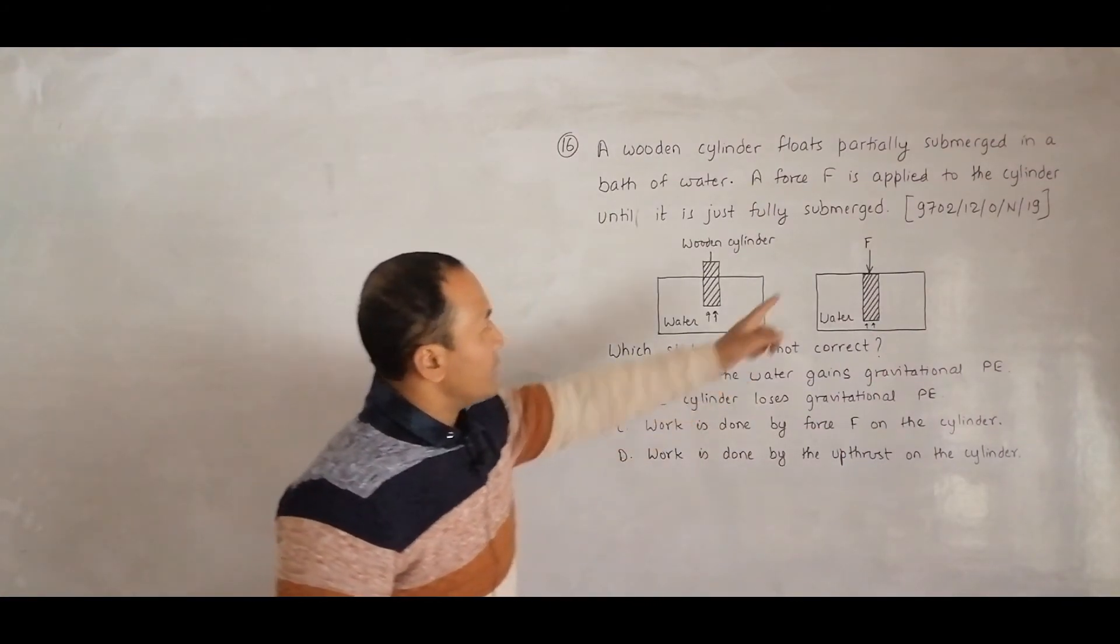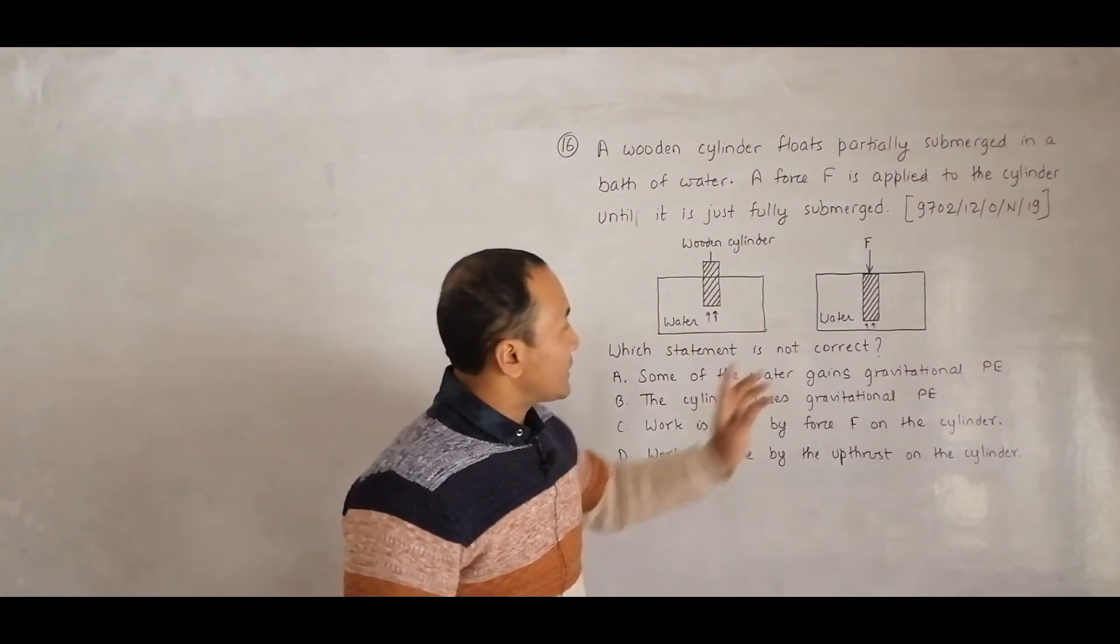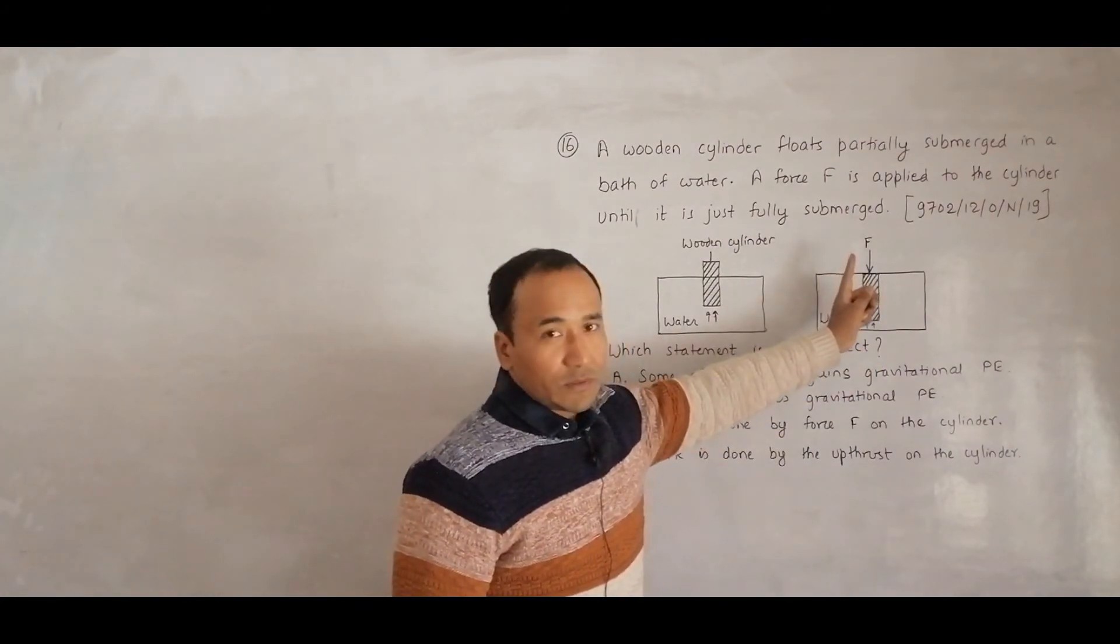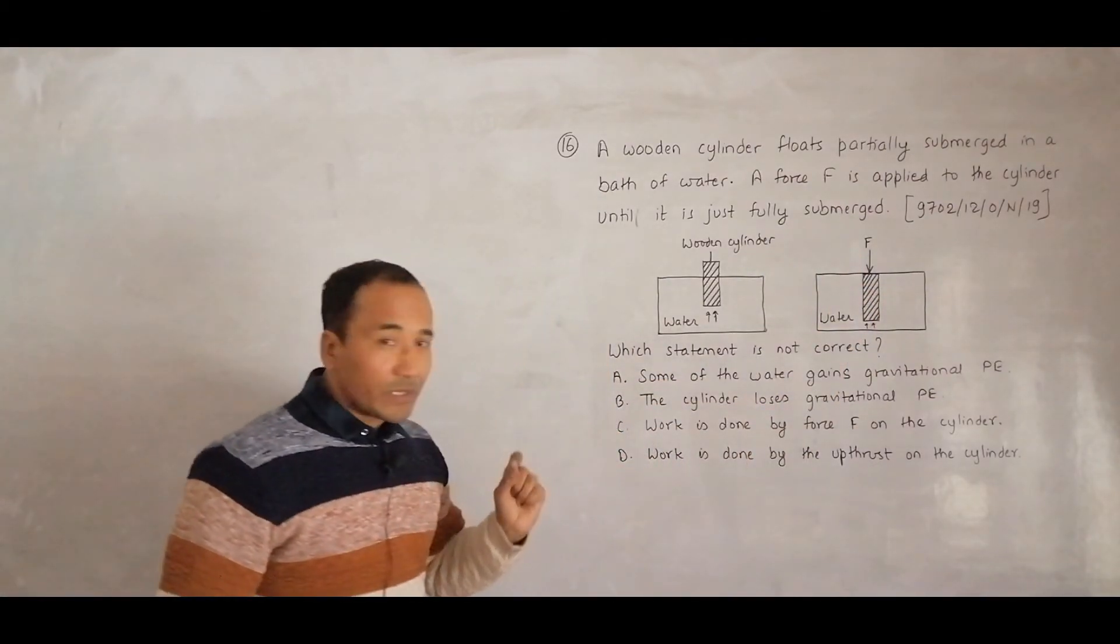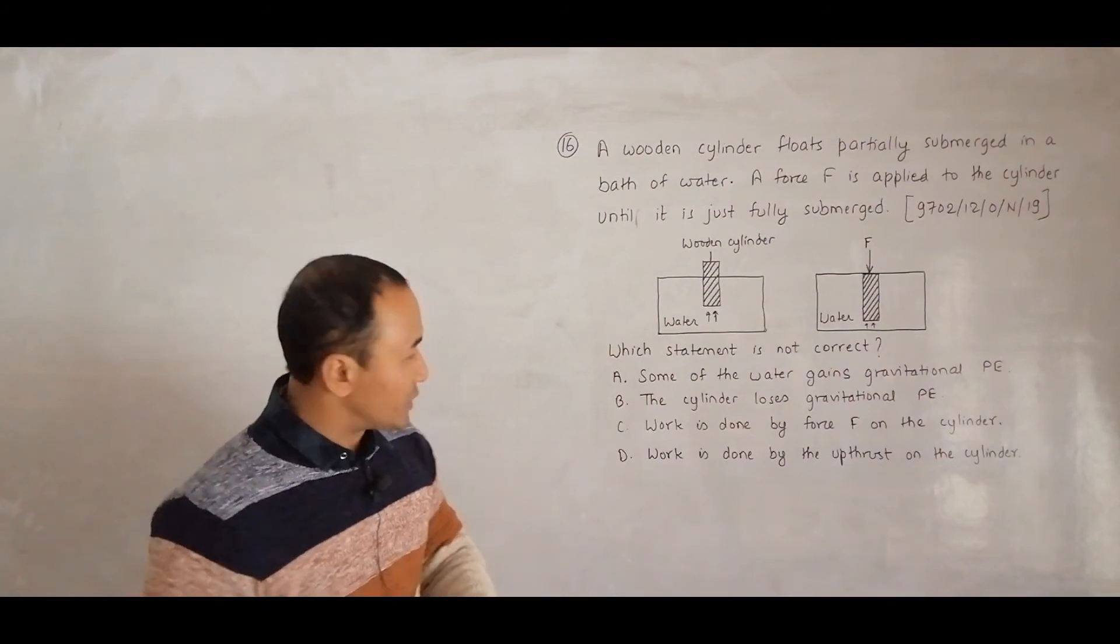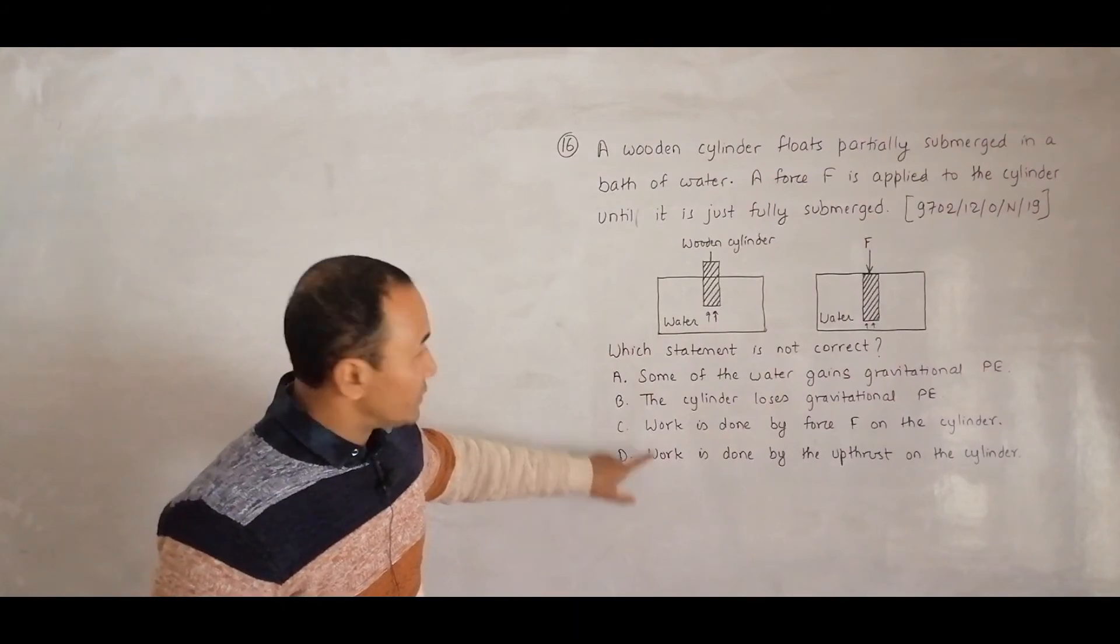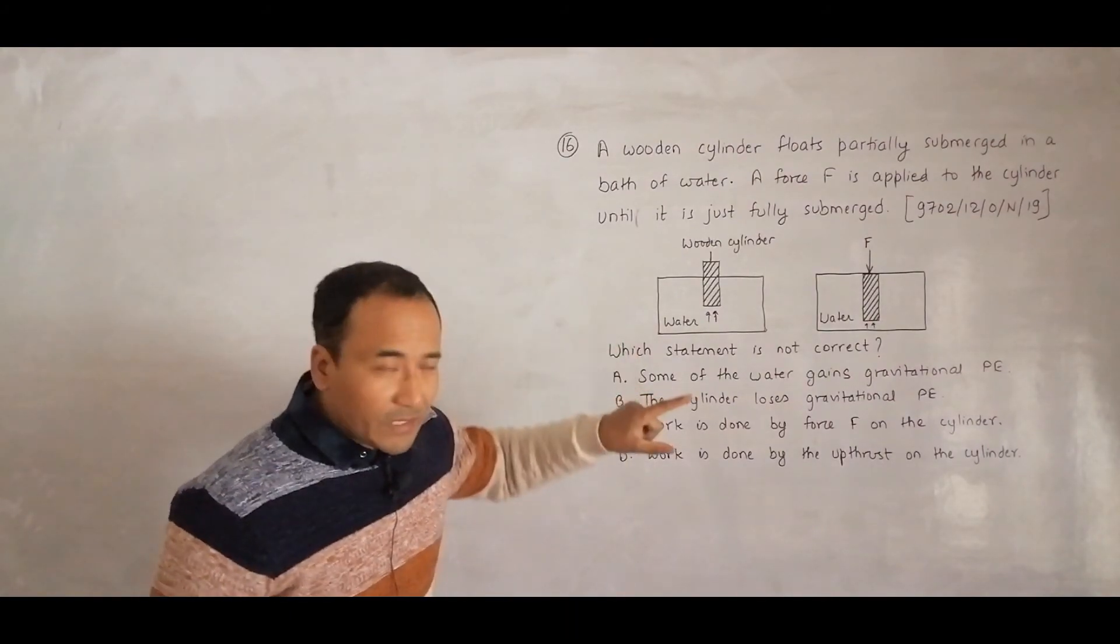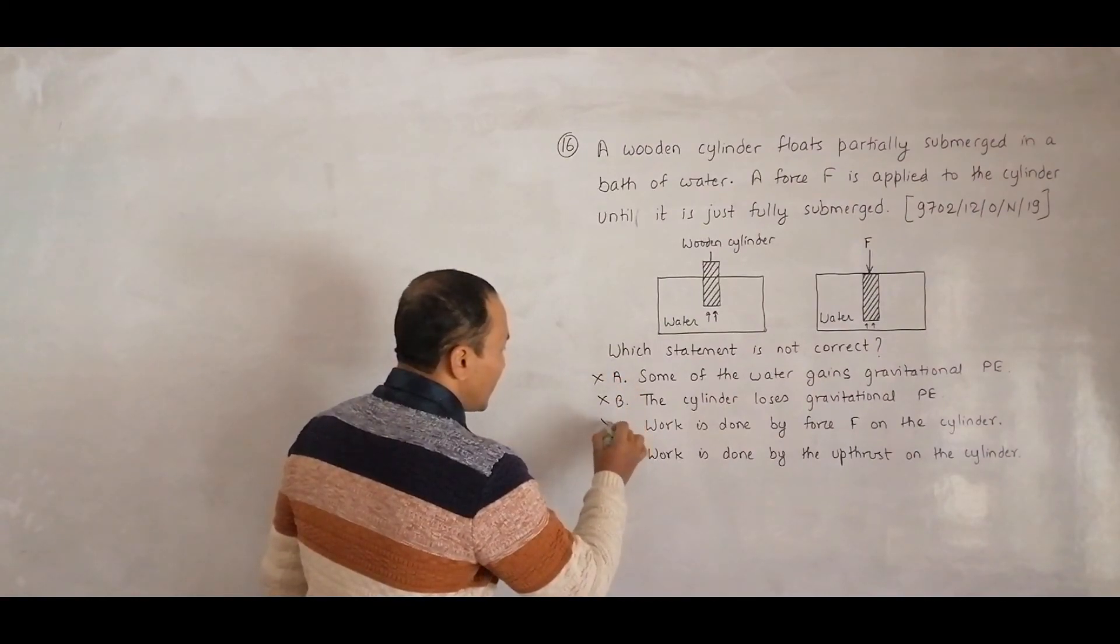However, if we remove this force, the upthrust will bring it upward and might do work then. But right now it is not doing any work, it's not able to do work. That's why this is an incorrect statement. So the answer is D - which one is not correct.